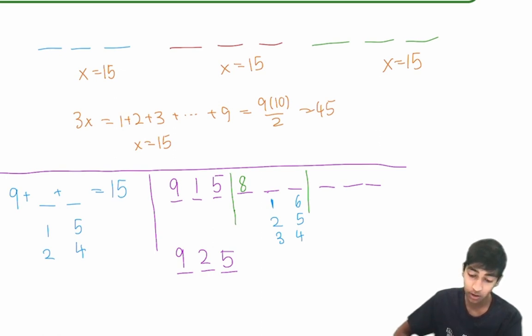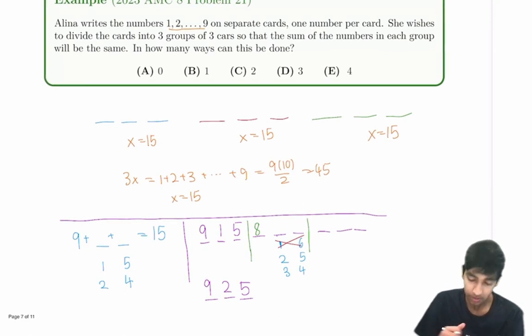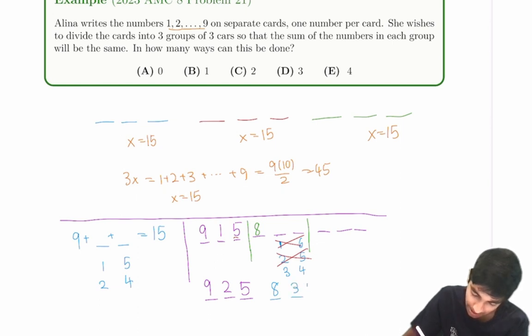Now, do all these work? Well, can we have 8, 1, 6? No, because we already took the 1 part. So we cannot use 1 again. So this possibility doesn't work, because 1 cannot be used twice, right? We're dividing into three groups, there's no card that can be duplicated twice. Okay, now what about 2, 5? This also doesn't work because of the 5. We don't have a 5. Now 3, 4. This does work. So this is a possibility.